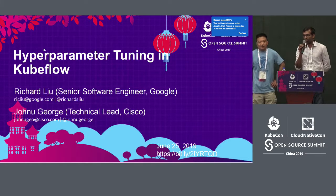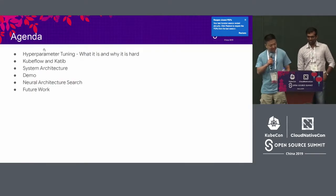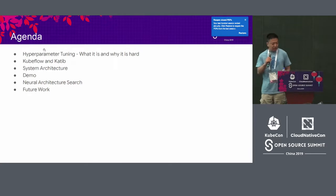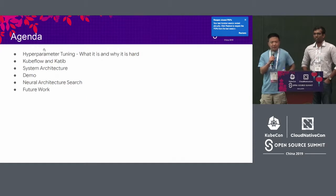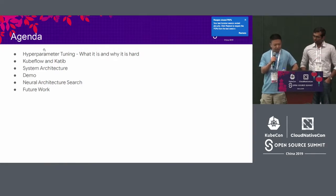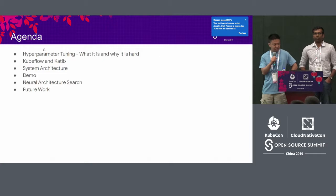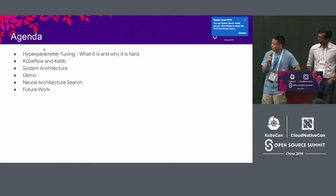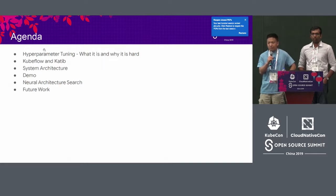I'm technically from Cisco, working on Kubeflow. Today's agenda: we're going to introduce hyperparameter tuning, briefly covering what it is and why it's hard. We'll go into our main topic, Kubeflow, and see how these systems help us do hyperparameter tuning. We'll cover the system architecture and workflows, show a quick demo, go into neural architecture search, and finally discuss some future work.